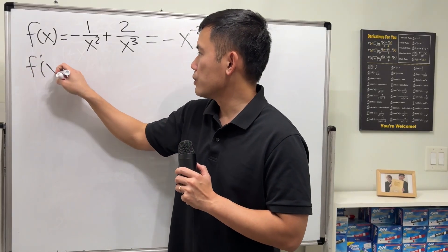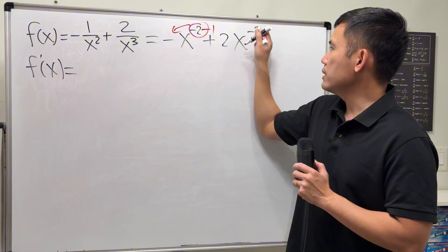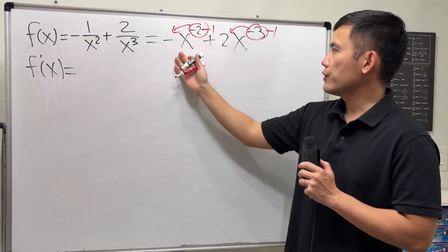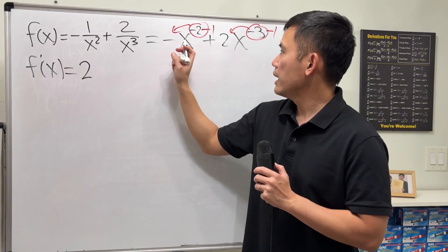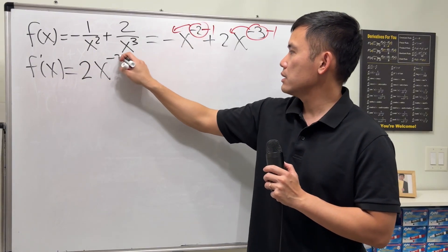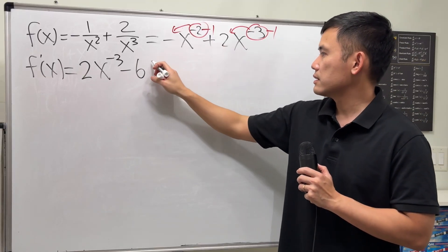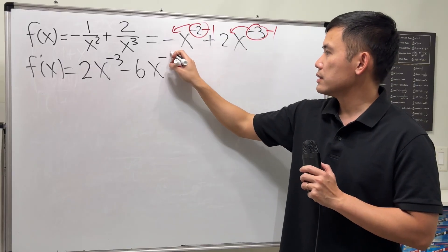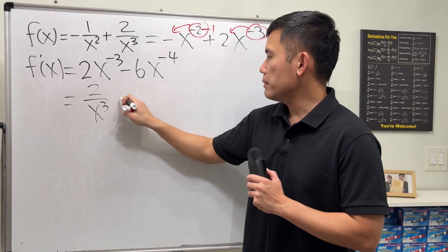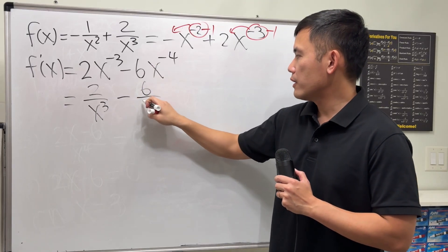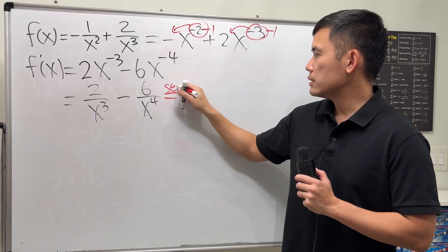Then we can use the power rule. Like always, bring the power to the front, minus 1, bring the power to the front, and minus 1. So for the first one, negative 2 times negative, we have positive, and x to the negative 3. And then negative 3 times 2, that becomes negative 6, and then we have x to the negative 4. Then we are going to write this as 2 over x to the 3rd power, minus 6 over x to the 4th power.